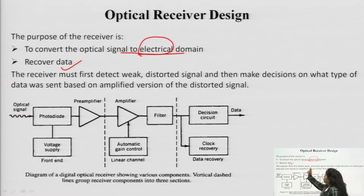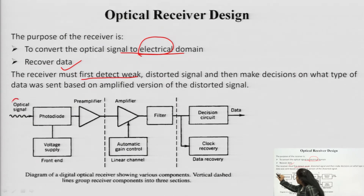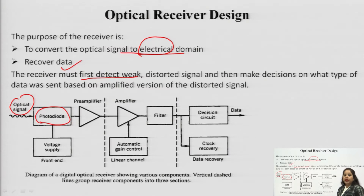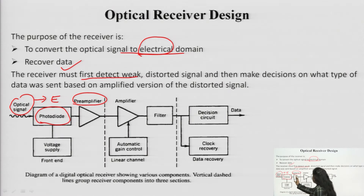The receiver must first detect the weak signal. The signal received at the receiver section in the optical system has very low amplitude — that is why it is called a weak signal. The optical signal is detected by the photodiode, which converts this optical signal into an electrical one. Then a preamplifier is added, because the signal is very weak. It is called the preamplifier because it is added prior to the other circuits.